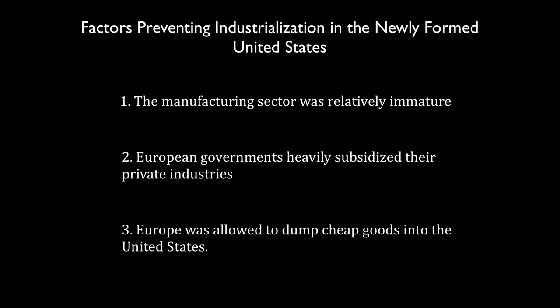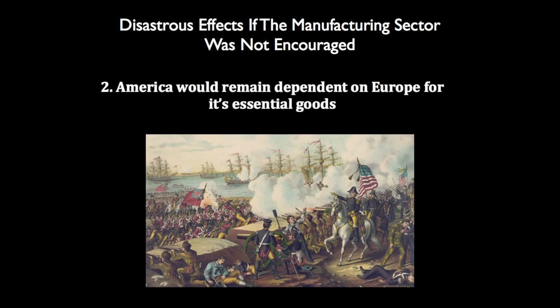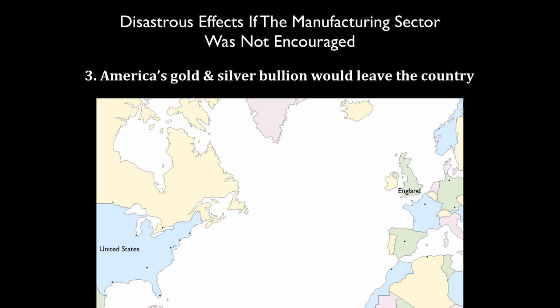Hamilton reasoned that if the situation were not remedied, the effects would be disastrous for America. The growth of home manufacturing would be retarded even further, since Americans would naturally buy cheaper, more abundant, and possibly better-made foreign goods — American manufacturers would lose markets and possibly fail. Second, America would remain dependent on Europe for its essential goods, which in a time of war could be disastrous. Third, America's gold and silver bullion would leave the country, enriching foreign nations while America became poorer.